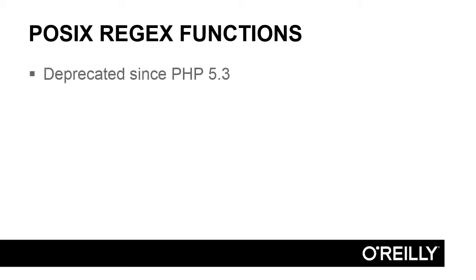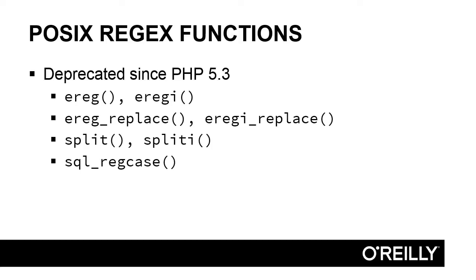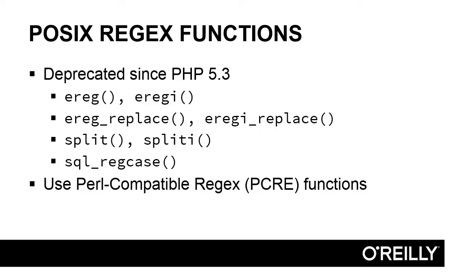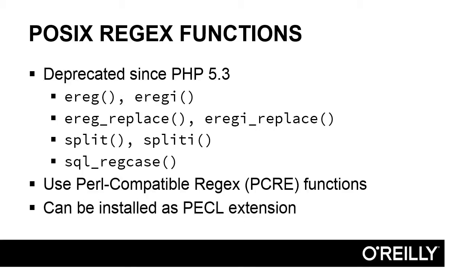These POSIX functions have been deprecated since PHP 5.3, but are popular with beginners. This is a full list of the functions that have been removed. All work with regular expressions should now use the Perl-compatible regular expression functions such as preg_replace. However, if you still need the POSIX functions in PHP 7, you can install them from PECL.